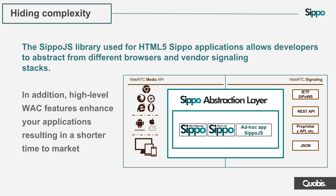We're making the application work with no dependencies on the type of device and network the customer is using — this is a critical feature we provide. Second, WebRTC is a pretty open standard. It doesn't specify signaling, and different vendors support different protocols — SIP over WebSockets, JSON, or their own proprietary APIs. The WAC abstracts this too, allowing different applications or the same application to work with different vendors.